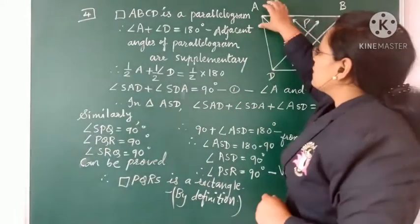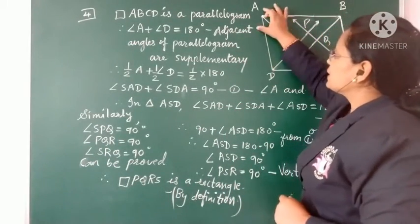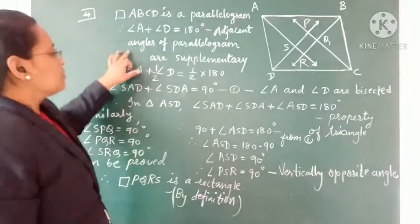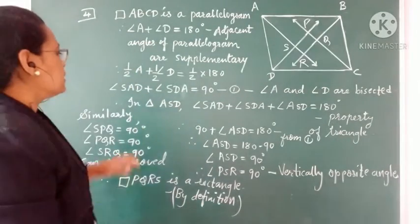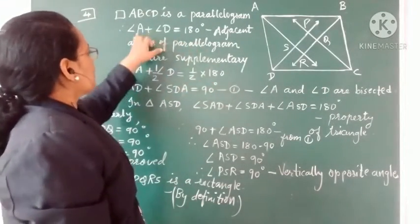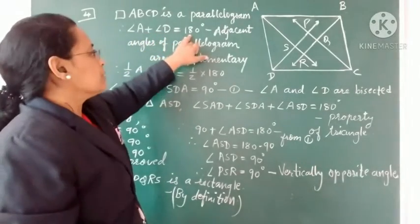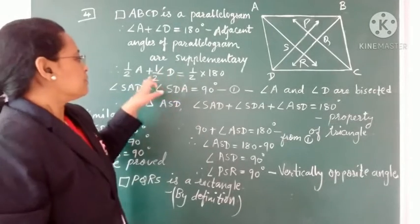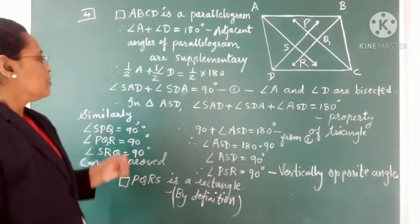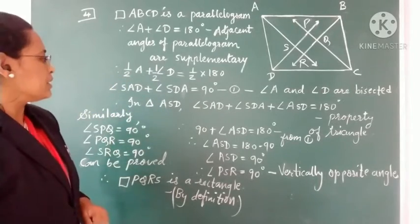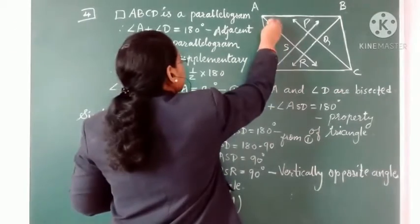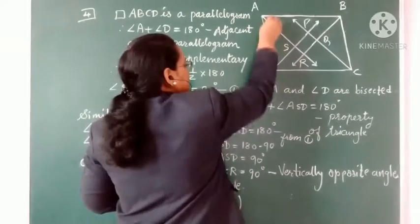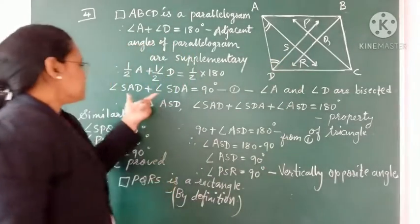We start with the given: quadrilateral ABCD is a parallelogram. We use the property that adjacent angles of a parallelogram are supplementary. Taking the pair of adjacent angles A and D: angle A + angle D = 180°. We take half of each angle, so half of angle A plus half of angle D equals 90°. This gives us angle SAD + angle SDA = 90°.